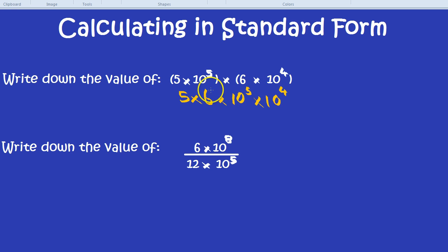Now, when I phrase the question in this way, it might look a bit easier. What is 5 times 6? It's 30.